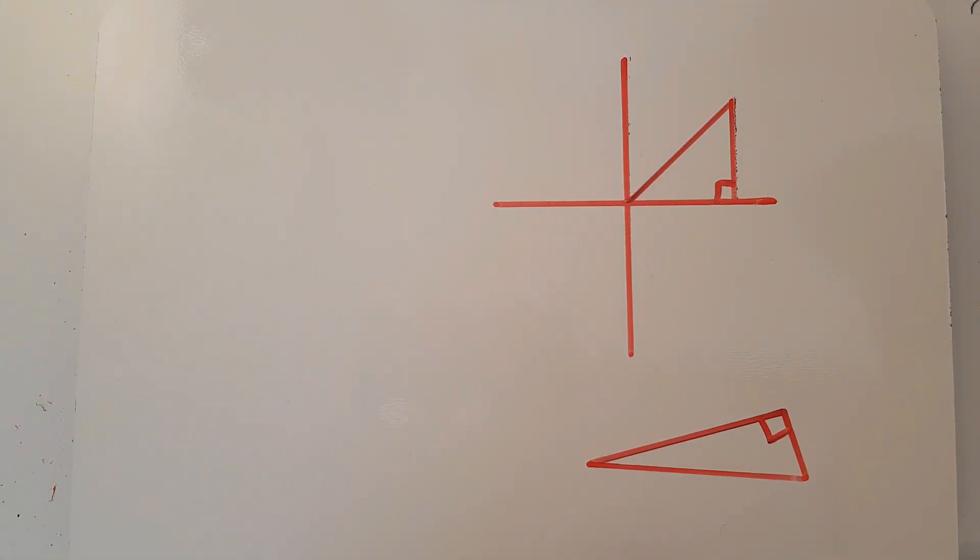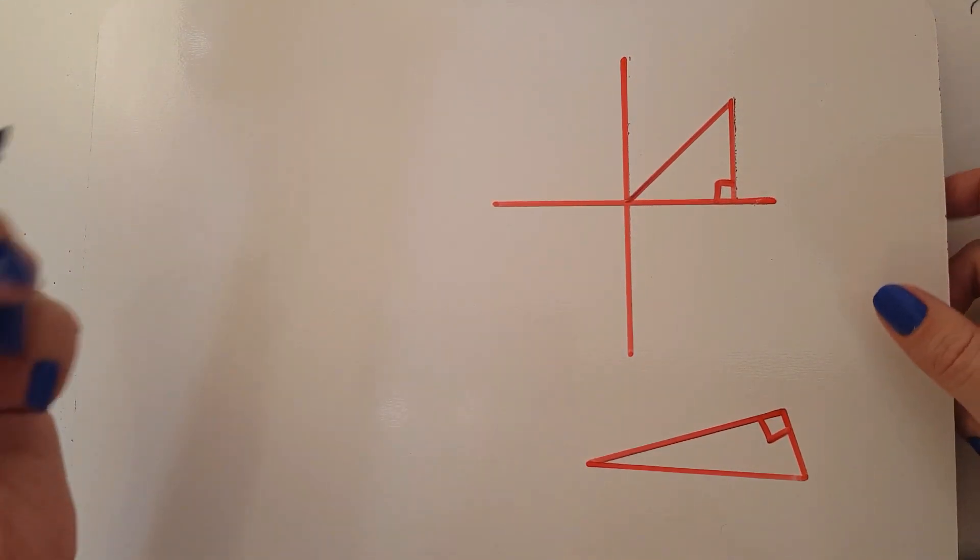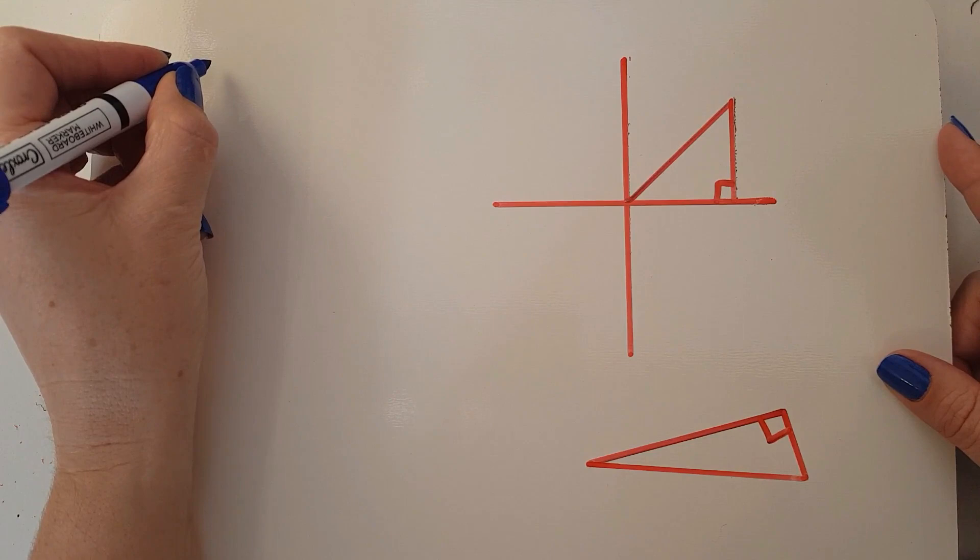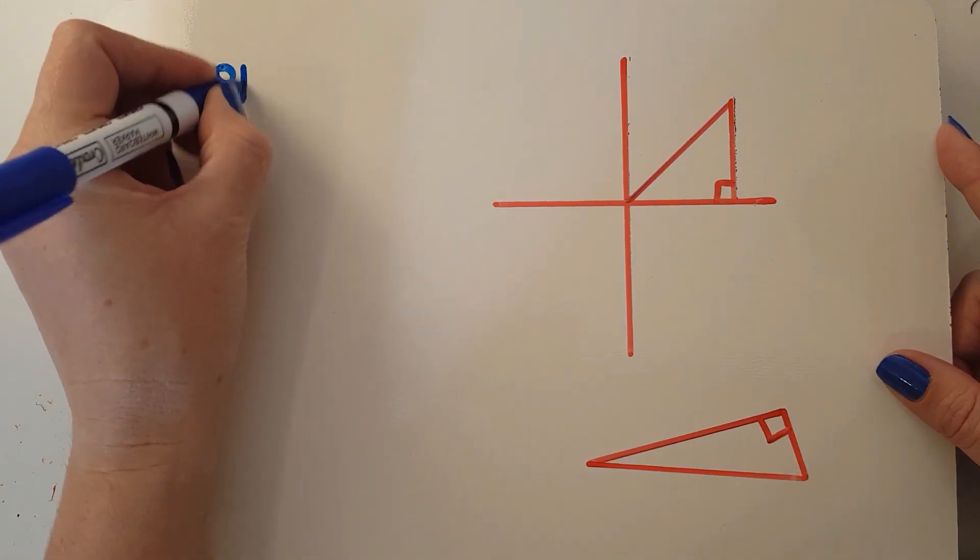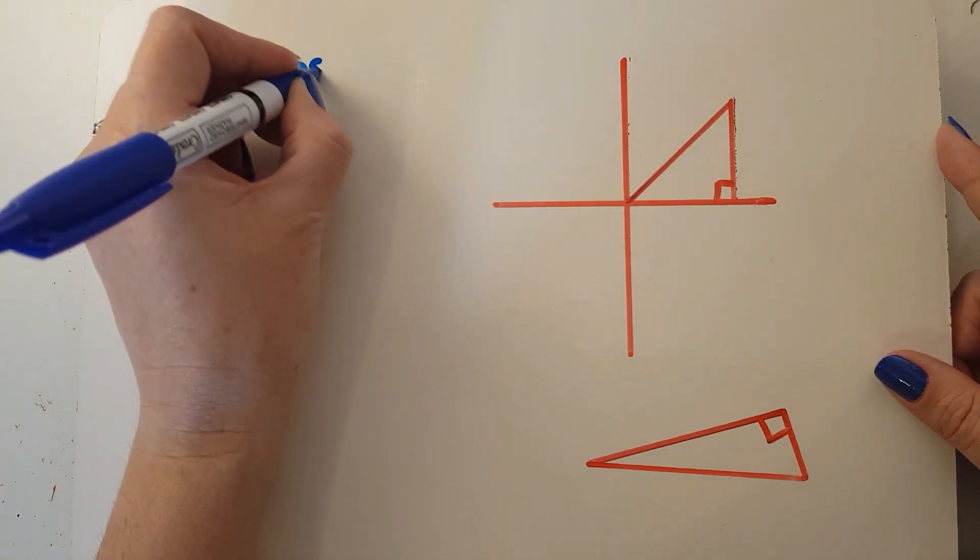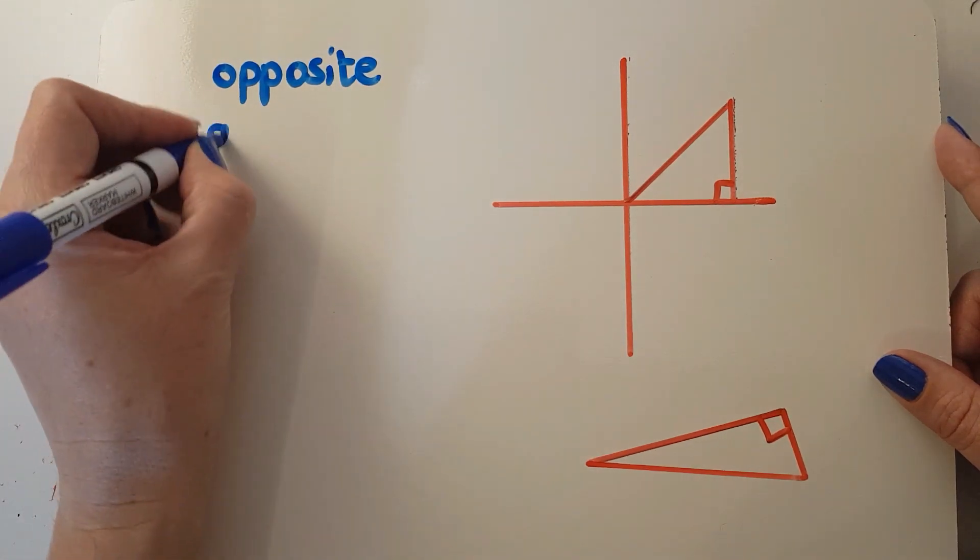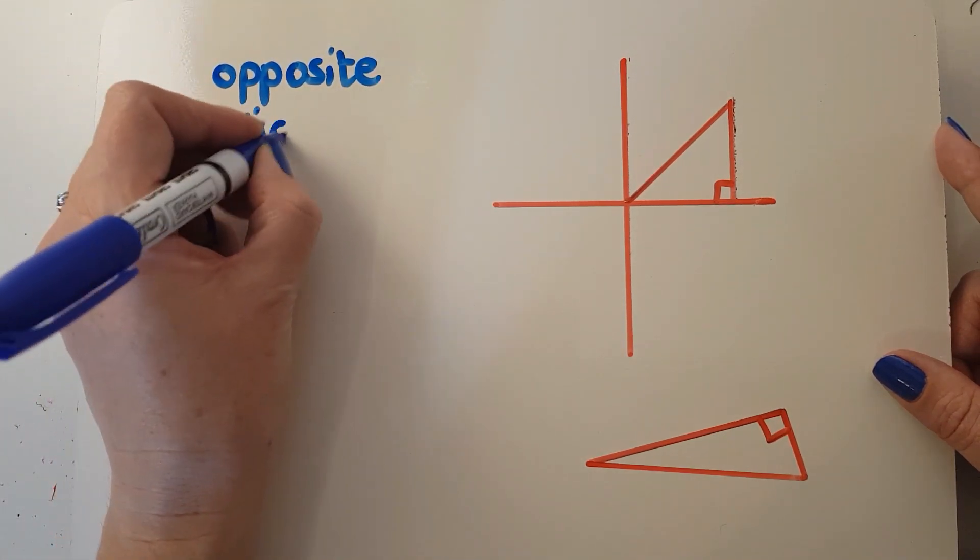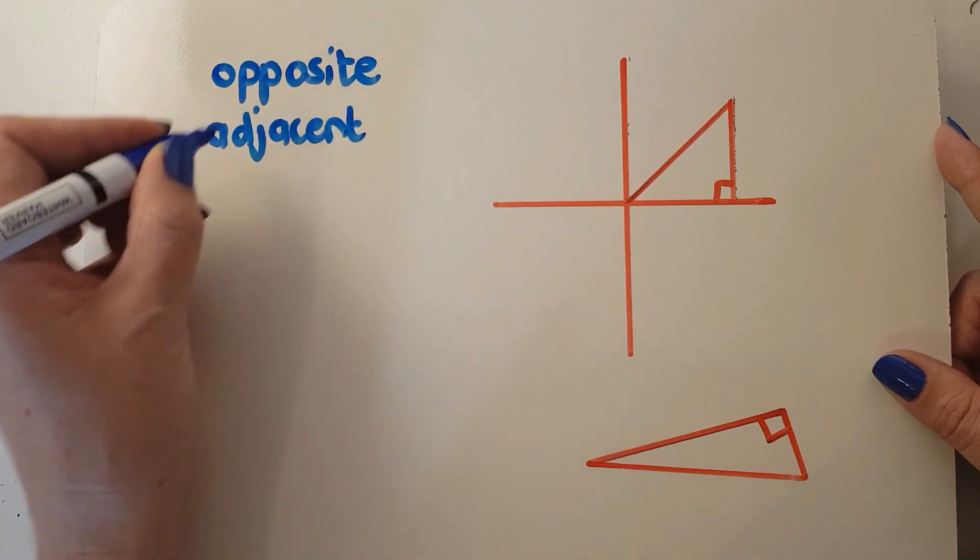The other concept that you will deal with in trig in grade 10, and then not very often after that, is the idea of things being called opposite sides to the angle, adjacent, and hypotenuse.